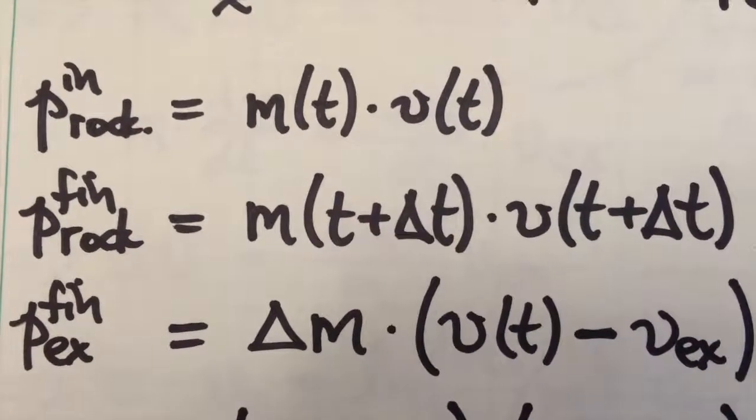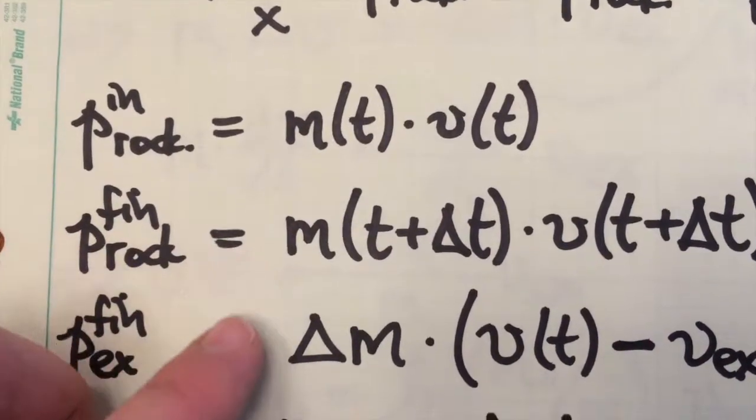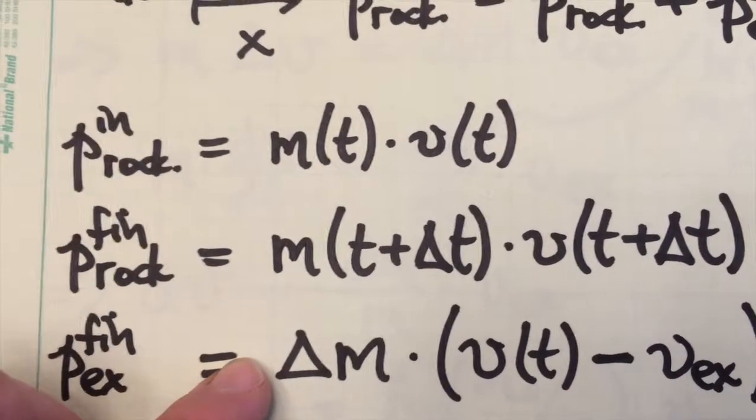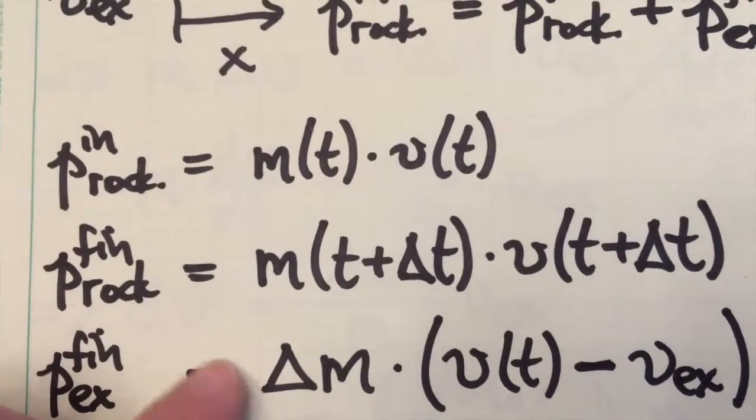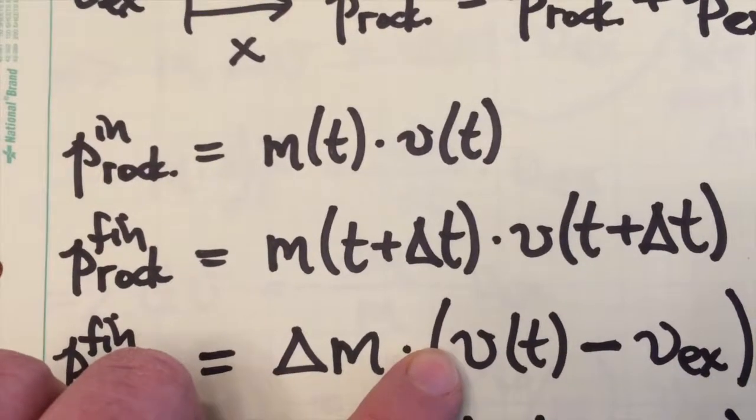As the exhaust is being fired out the back of the rocket, the exhaust has some small mass, delta m, and that's being multiplied by its velocity, which in this case is going to be the velocity of the rocket the instant before the exhaust was ejected plus the velocity with which the exhaust is ejected.